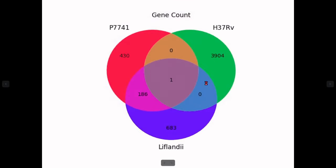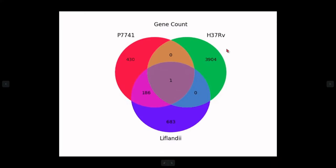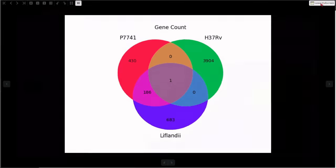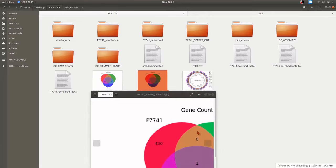The next Venn diagram compares with H37Rv. This is interesting: 3,904 genes were unique to H37Rv, which explains why it was clustering separately in both the dendrogram and the pangenome matrix. P7741 and H37Rv shared no genes in common, and there's only one gene that was common among all three. This shows how distant the relationship is between H37Rv and P7741, providing a lot of insight into bacterial genome analysis.